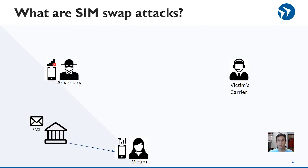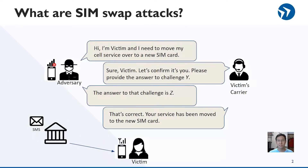A SIM swap is an attack in which cell service in your phone is diverted into another SIM card in another phone, thereby cutting off your phone service and placing it in the hands of an unauthorized entity. In an attack, the adversary poses as the victim and calls into the victim's carrier to request a SIM swap. After the exchange, the victim's carrier goes ahead with the request and moves service over to a SIM card in the adversary's possession, cutting off all phone service to the victim.